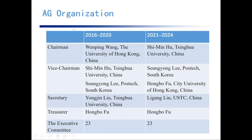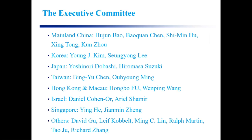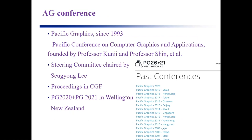This is the AG organization. Wenping is the founder of the society and the first chairman. Currently, I'm chairman of the society, and Song Yong Li and Hong Bo Fu are vice chairs, and Li Gang is secretary. We have 23 executive committee members. They are from mainland China, Korea, Japan, Taiwan, Hong Kong, Israel, Singapore, and internationally from Europe and the United States.